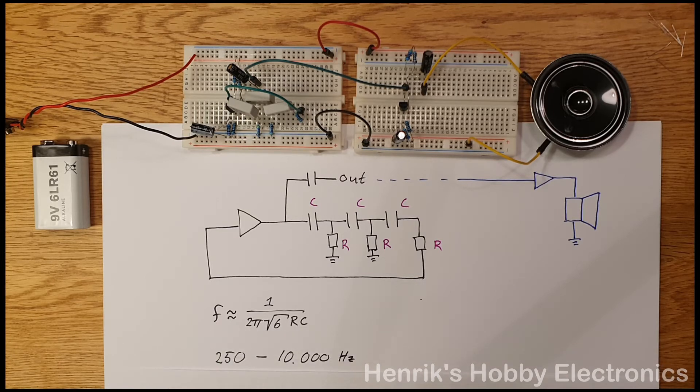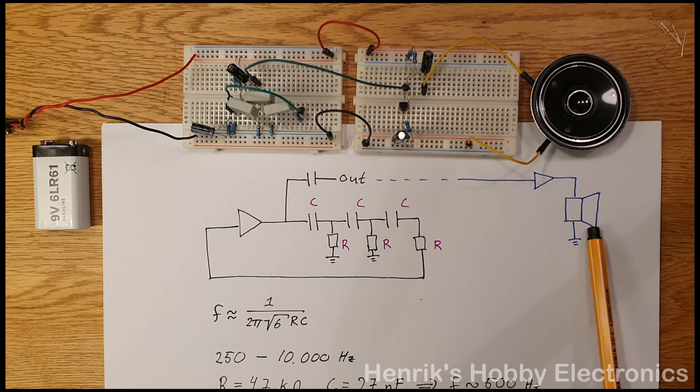The audio range is 250 Hz to 10,000 Hz. In this example here we will use 4.7 kΩ resistor and we'll use 27 nF capacitors. This would give us a frequency of roughly 500 Hz, which is something that you should be able to hear in the loudspeaker.